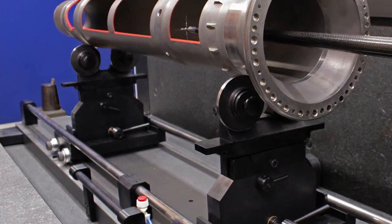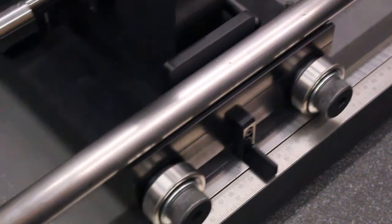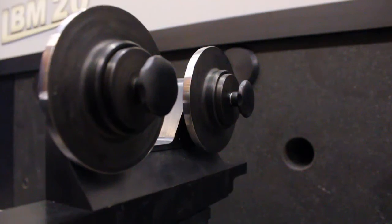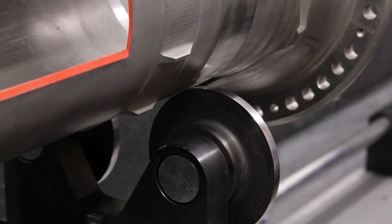In addition, the LBM is offered with purpose built fixturing to enable the holding and support of a variety of components. This helps particularly with rapid setups as easily adjusted rollers take the place of conventional V-block supports.